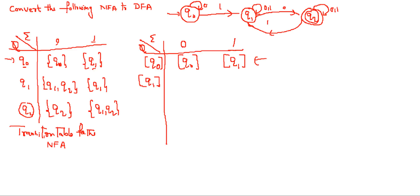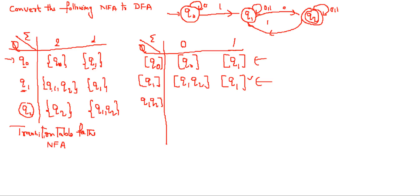Now apply 0 on Q1 — you are going to Q1 and Q2. That means you have obtained a new combined state {Q1, Q2}. If you apply 1 on Q1, you are going to Q1 only. Out of these results, Q1 is already discussed, so the new combined state is {Q1, Q2}.